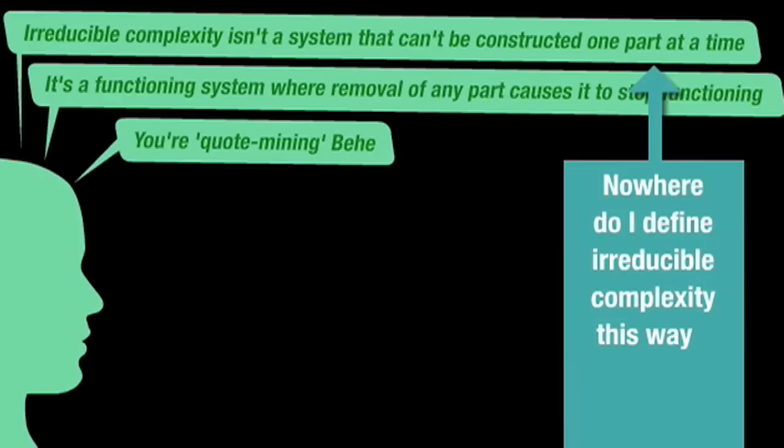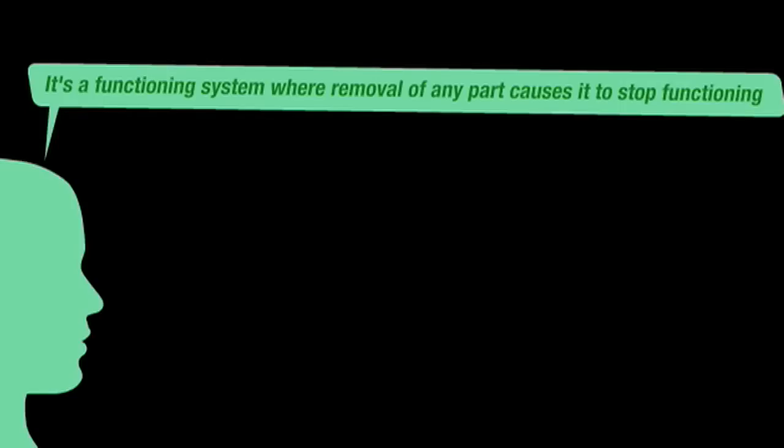Secondly, nowhere do I define irreducible complexity as a system that can't be constructed one part at a time. Nor do I quote Behe talking about construction one part at a time. So, again, a quote-mine without a quote isn't a quote-mine. Furthermore, this definition is misleadingly vague.